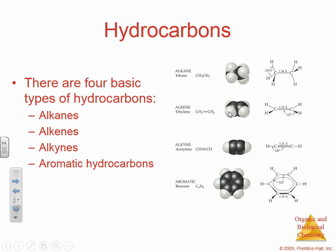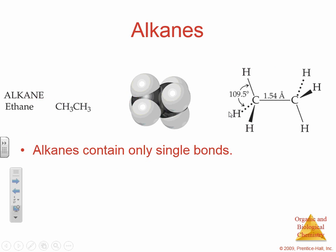Alkanes are carbon-hydrogen bonds which have all single bonds. Alkenes are, again, just carbon-hydrogen — they contain at least one double bond. And alkynes, again, are carbon and hydrogen — they contain at least one triple bond.